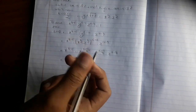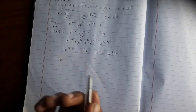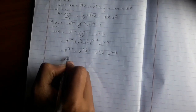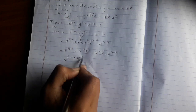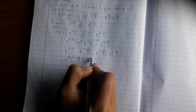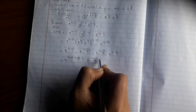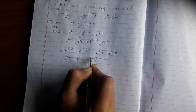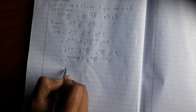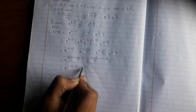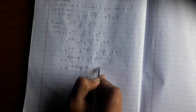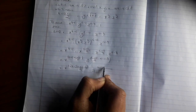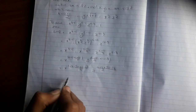X to the power 2 into B minus C plus C minus A divided by 2. X to the power B minus C plus C minus A divided by 2, digit color C minus A by 1 plus 2A minus 2B.